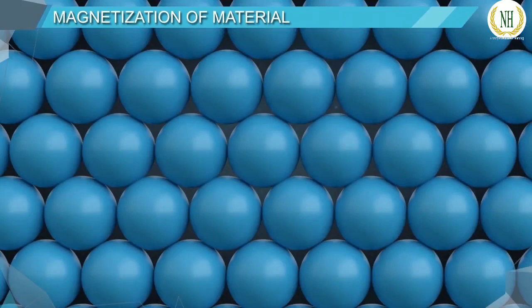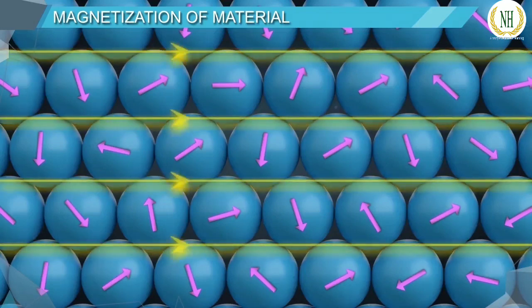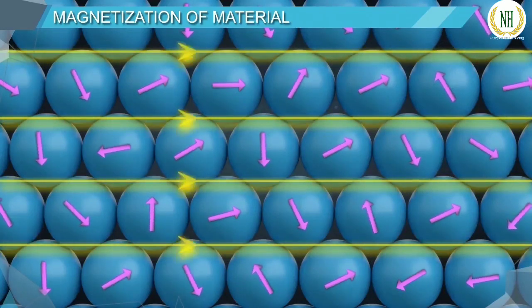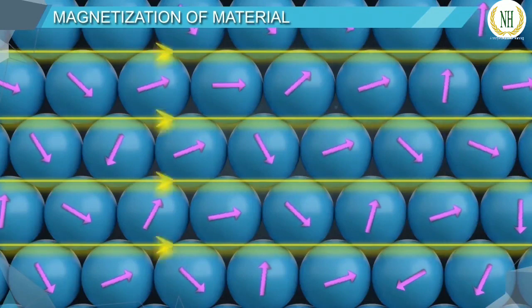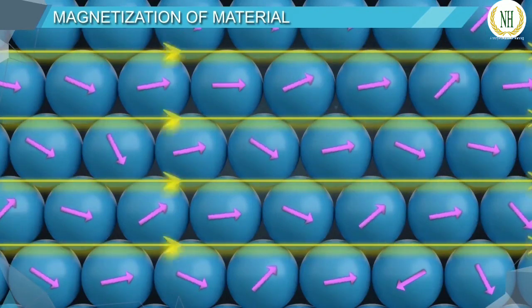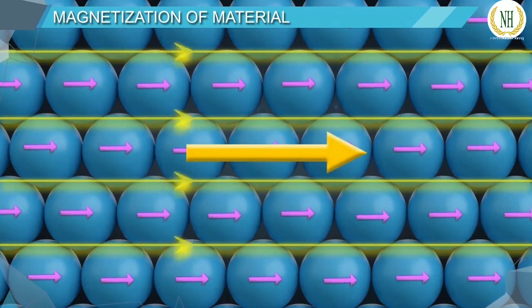Every material consists of more than one atom. Generally, the magnetic moments of these atoms are randomly oriented and the net dipole moment of the material is zero. However, when the material is placed in an external magnetic field, the magnetic moments of these atoms tend to align themselves to the magnetic field and develop a net magnetic moment.